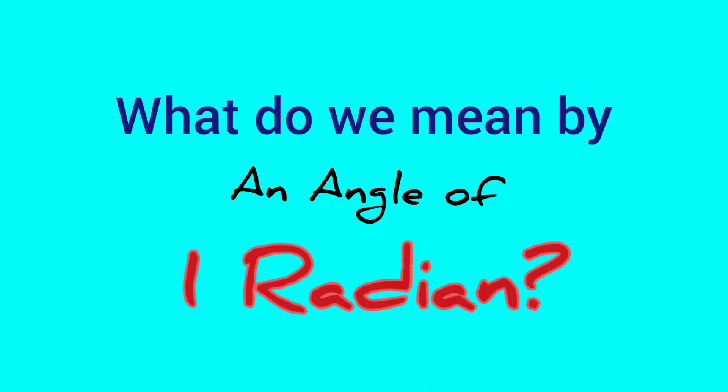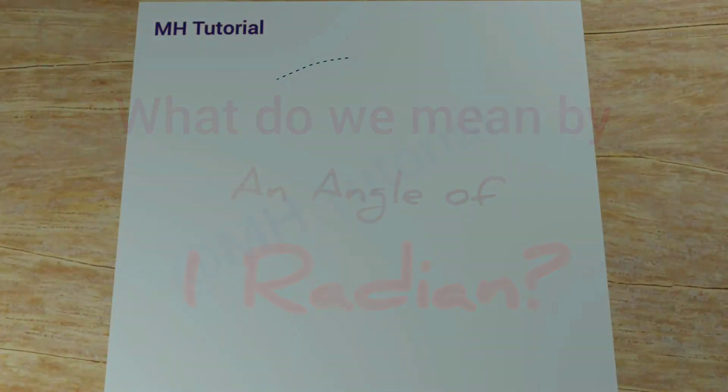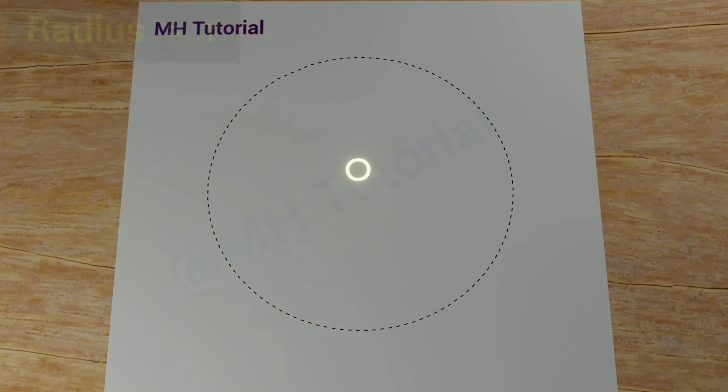What do we mean by saying one radian? Imagine a circle on a plane whose center is at O. The radius of the circle is R.